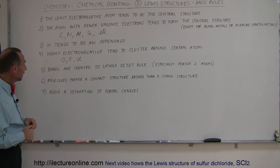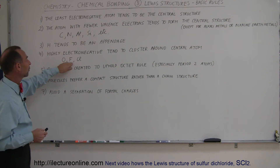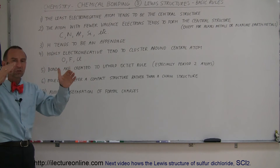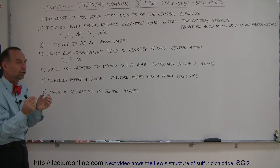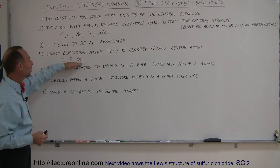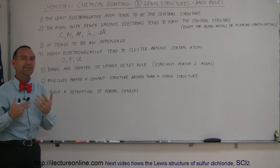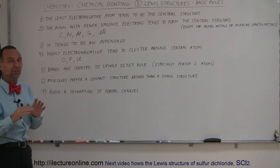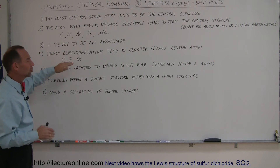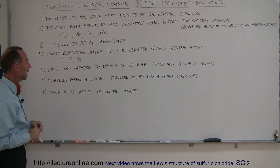Number four: the ones that are highly electronegative, such as oxygen, fluorine, and chlorine, tend to cluster around the central structure. So you end up with more of these molecules around maybe a single central one — as the typical structure for molecules. Not an absolute, but as a typical structure, you'll maybe have one or two of these central atoms and a bunch of those electronegative atoms clustering around the central atom.